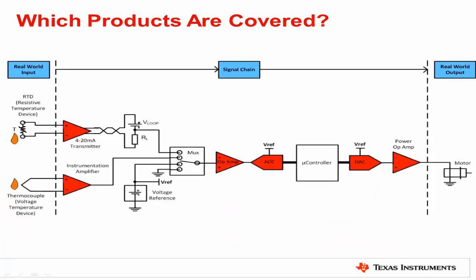The complete TI Precision Labs curriculum will cover a wide variety of products in the precision analog signal chain, including op amps, instrumentation amps, ADCs, DACs, comparators, current transmitters or XTR, multiplexers, and references.